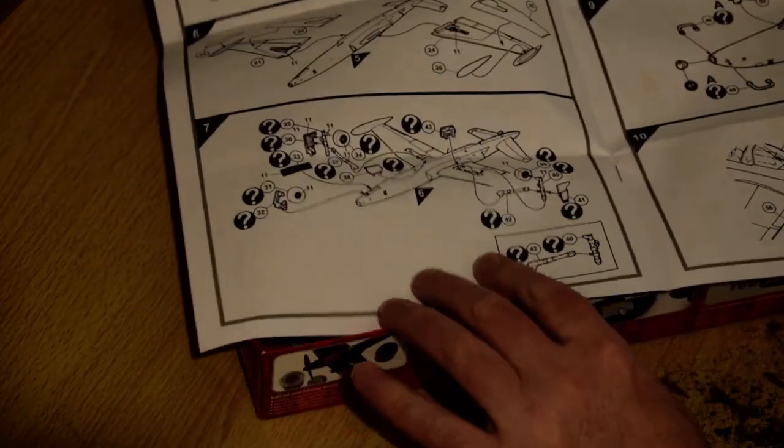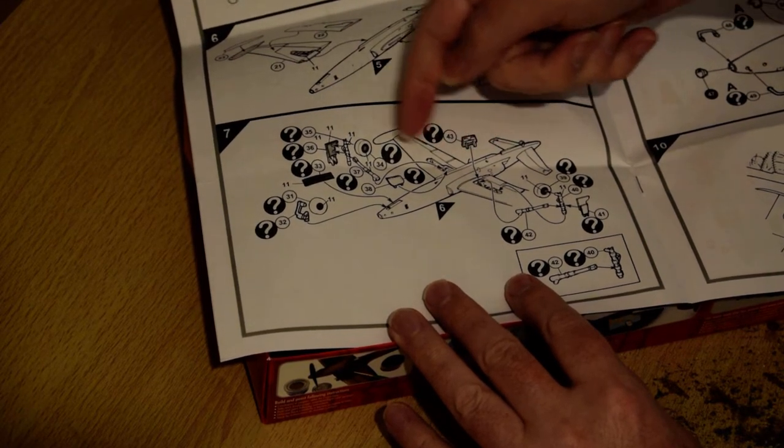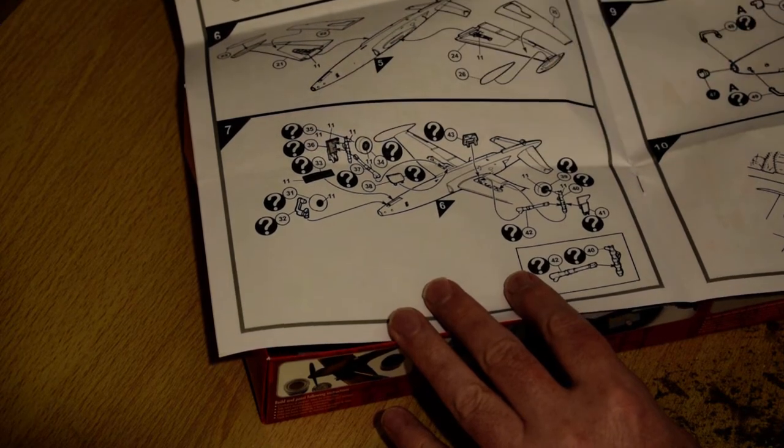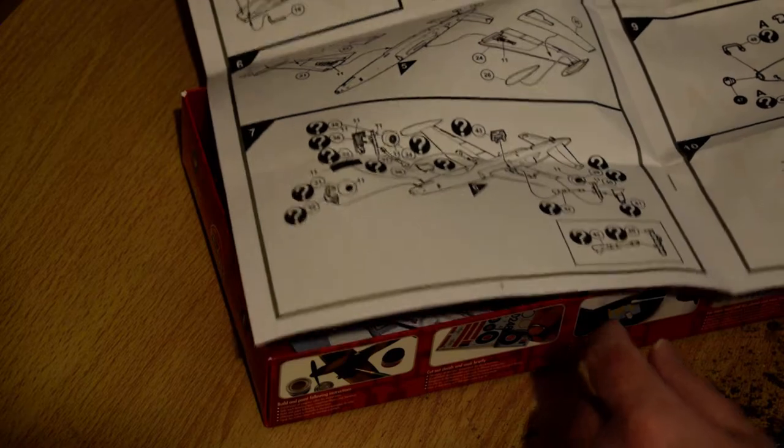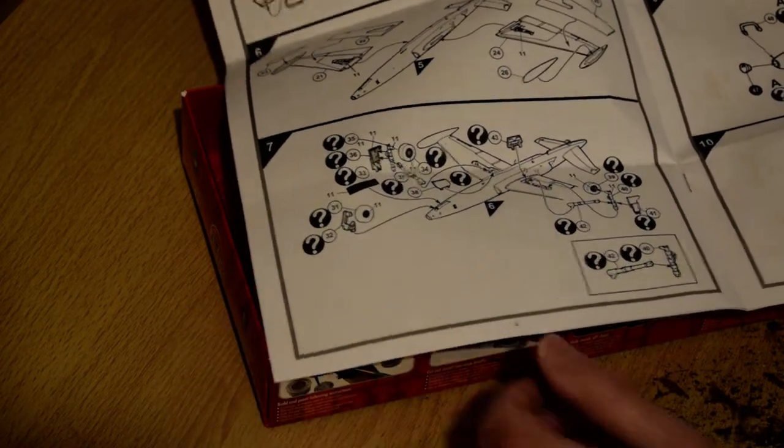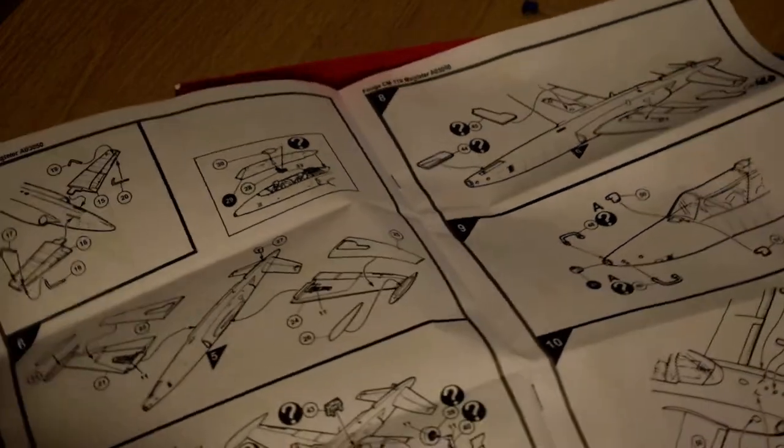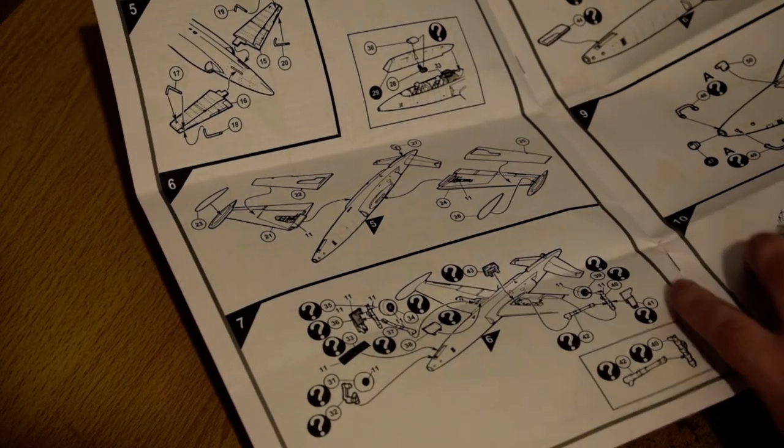Now this is the strangest part. Instead of saying this is optional wheels, you've got a question mark for every part of the undercarriage. That's just bizarre. It's like 11 different question marks where you could just have one there, and a little silhouette of wheels down and wheels up. But they've obviously adapted an old kit, even down to the instructions.